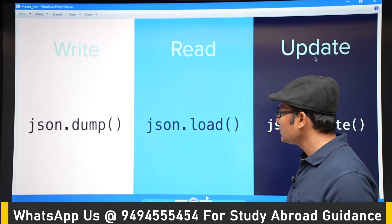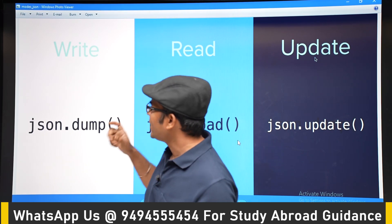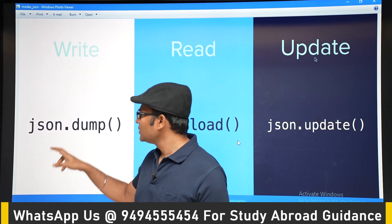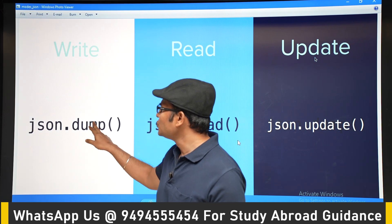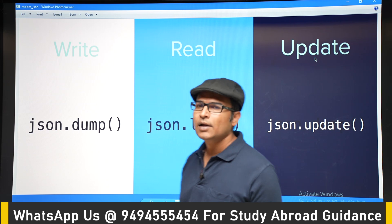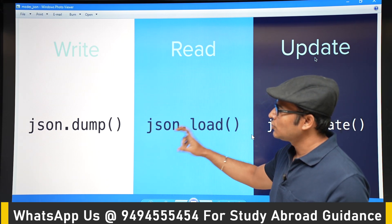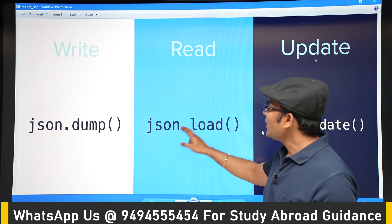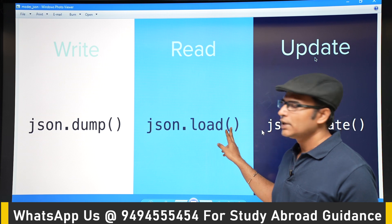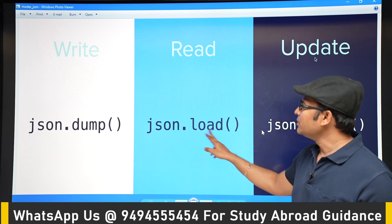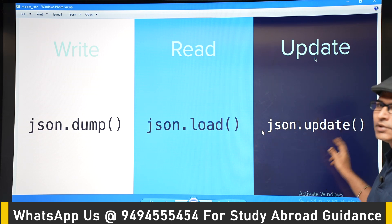To write something onto the file using JSON notation, there is a JSON module with the method dump — used for writing a JSON object onto the file. If you want to read a JSON object, the method is load. And if you want to update an existing JSON, then update is available.